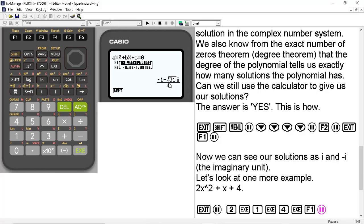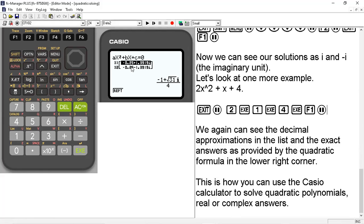You can have real and imaginary parts in rectangular form if those happen to be solutions. So again, we have the decimal formats in the list. We have the exact form in the lower right. And this is how you can use the Casio calculator to solve quadratic polynomials with real or complex answers.